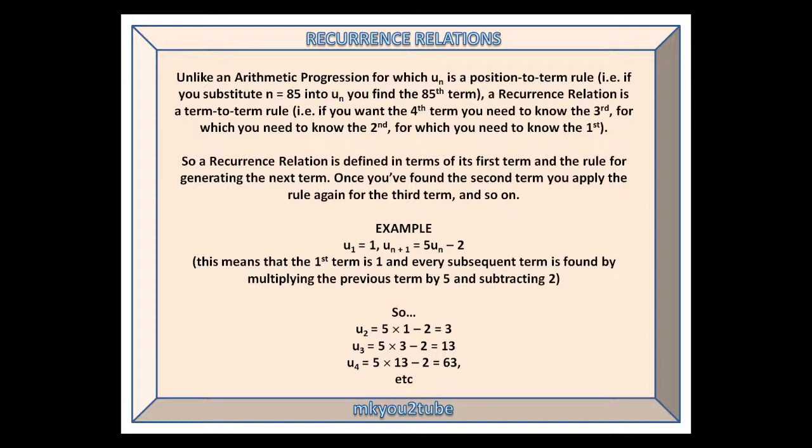So the second term is 5 times 1 minus 2, which is 3. The third term is 5 times 3 minus 2, which is 13, and so on, using the rule and the previous term to generate the next term.